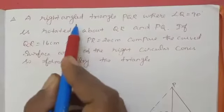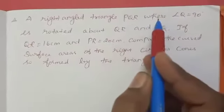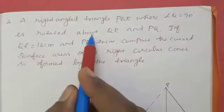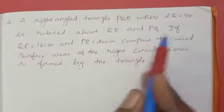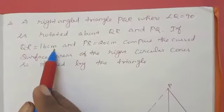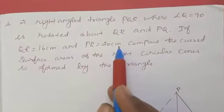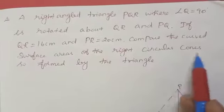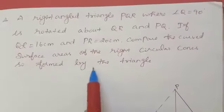For this problem, a right angled triangle PQR where angle Q is equal to 90 degrees is rotated about QR and PQ. If QR equal to 16 cm and PR equal to 20 cm, compare the curved surface area of the right circular cone so formed by the triangle.